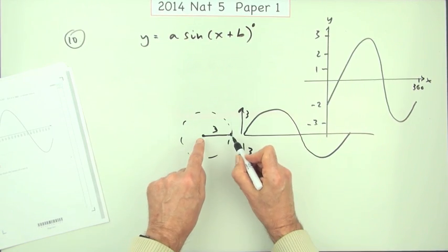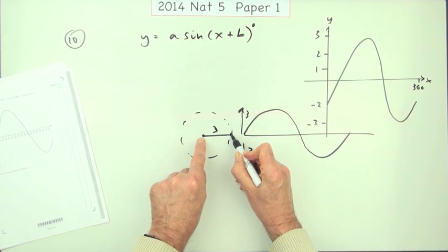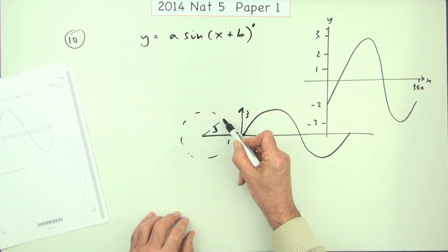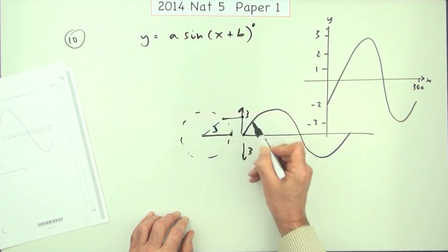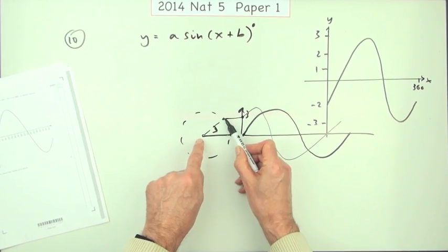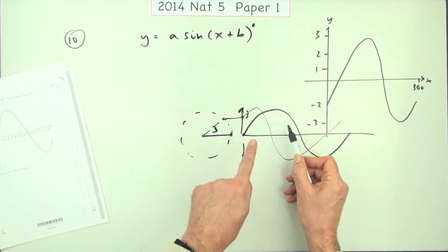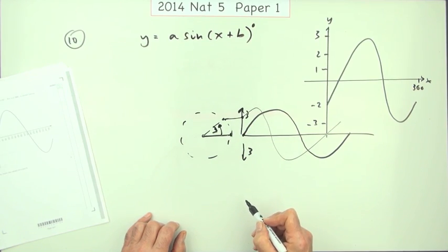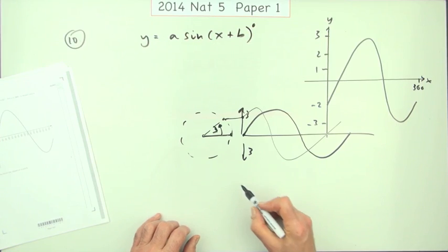And the other thing is, if I start here on the horizontal, that will start at the origin, if you like, and then go up 3, down 3. If I start ahead a bit, it would start up here, and then go up and down. Notice what's happened there. If I start ahead a bit, it seems to have moved back. If I started so many degrees forward, the graph looks as if it's going back.